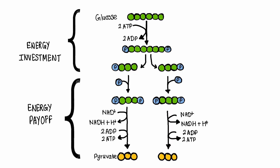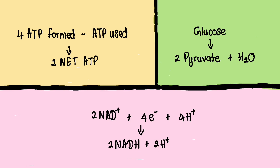The process is divided into two phases: the energy investment phase, where two ATP molecules are used to modify glucose, and the energy payoff phase, where four ATP molecules and two NADH molecules are produced. This results in a net gain of two ATP molecules for the cell. Glycolysis is vital because it provides quick energy and can occur with or without oxygen, making it a universal and flexible energy pathway.